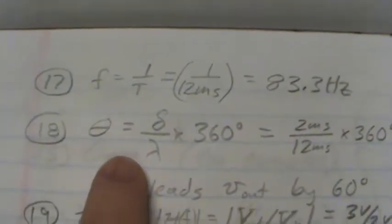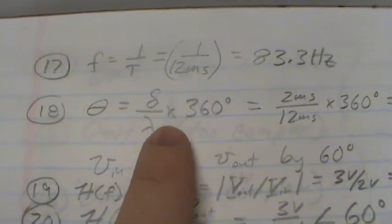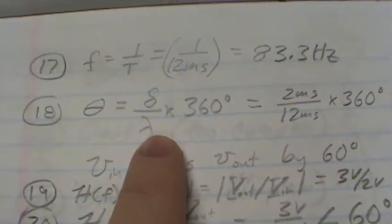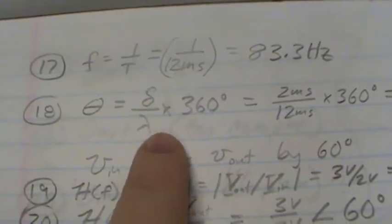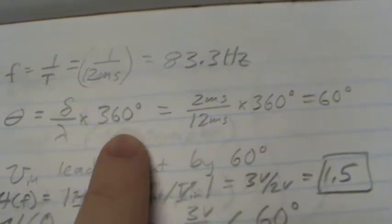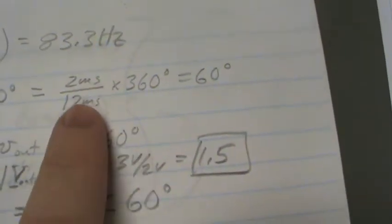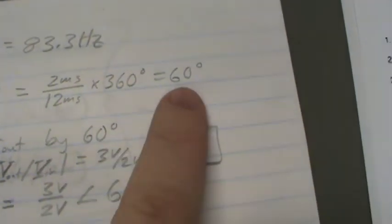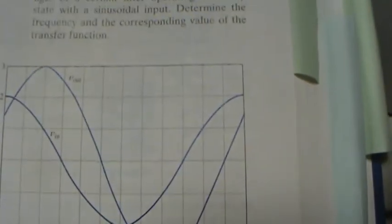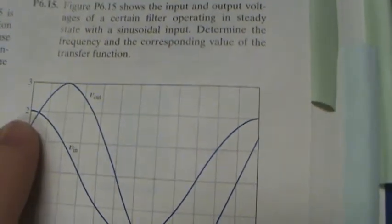The way we did it in the lab was you take the small delta over the long wavelength, that's the period, times 360 degrees and that gives you 60 degrees. 2 milliseconds over 12 milliseconds times 360 gives you that. In the diagram, you see that V in leads V out, this one is ahead of that one, by 60 degrees.